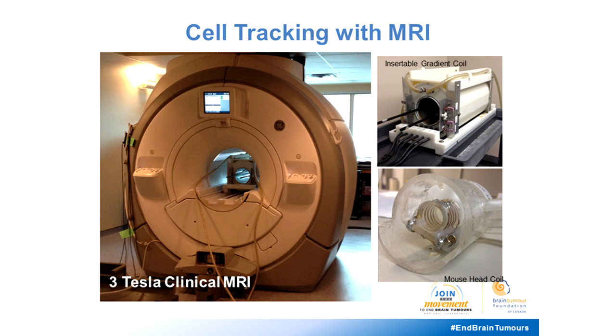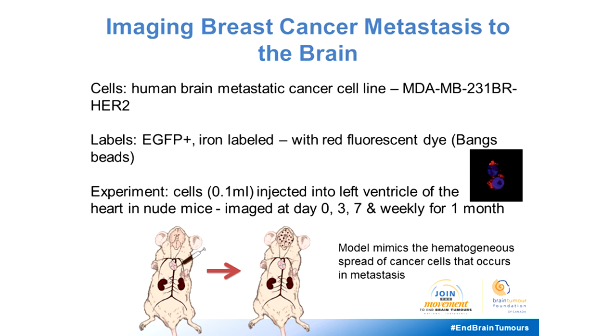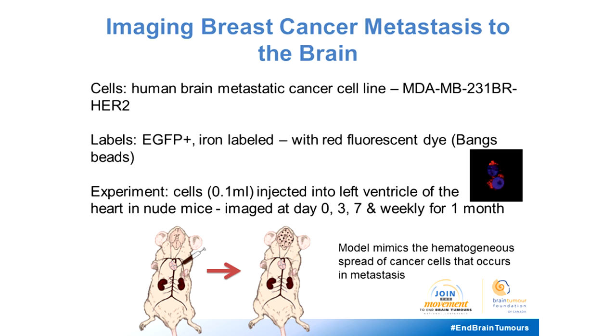We're using a patient MRI system with customized hardware adapted for mouse models. Our model system uses human breast cancer cells that are brain-metastatic — a cell line called MDA-MB231-BR HER2, which is a HER2-positive cell line. We label these cells with iron particles to see them with MRI and a red fluorescent dye for histology. These iron-labeled cells are then injected into the left ventricle of the beating mouse heart, delivered into the circulation, where they go to the brain, and then we begin imaging them.